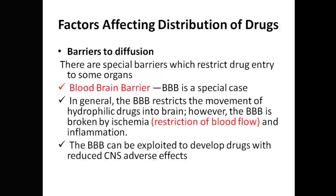The second factor is barriers to diffusion. There are special barriers which restrict drug entry to some organs. A key example is the blood-brain barrier, or BBB. The BBB restricts the movement of hydrophilic drugs into the brain. However, the BBB can be broken by ischemia, which is restriction of blood flow, and by inflammation. The BBB can be exploited to develop drugs which reduce CNS adverse effects.